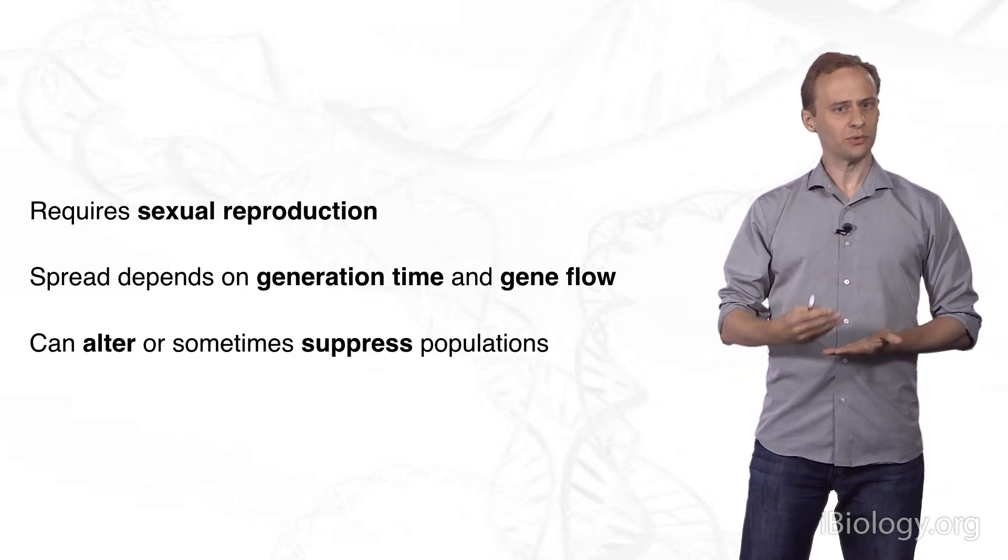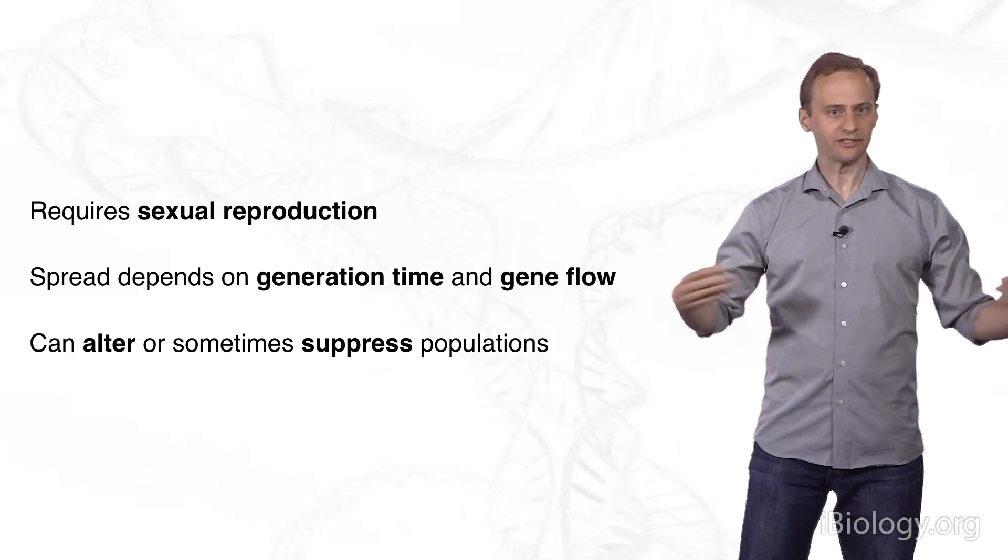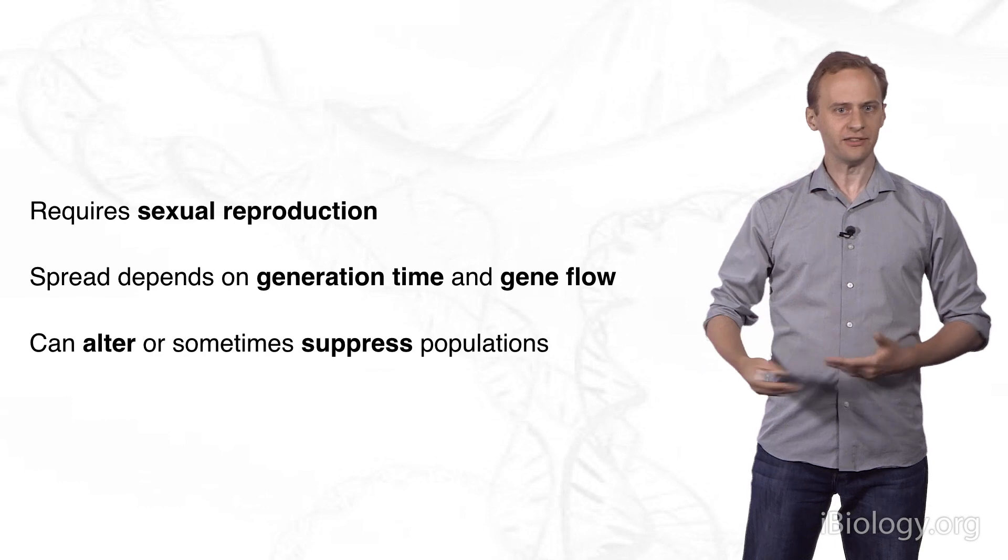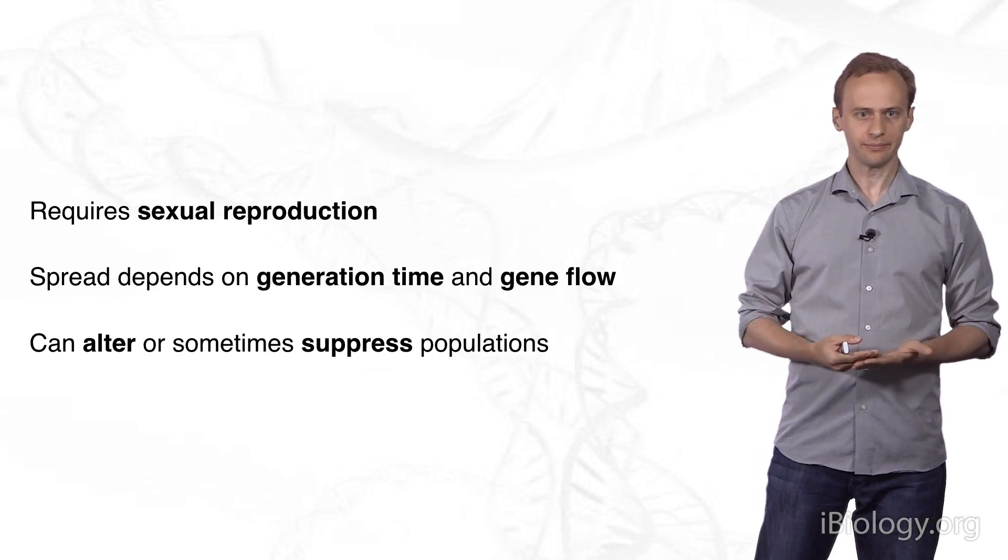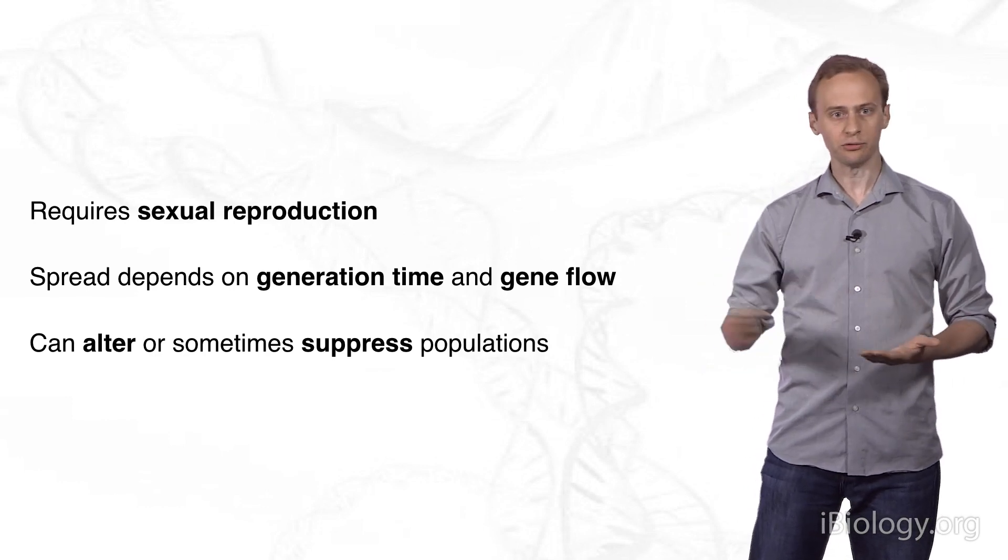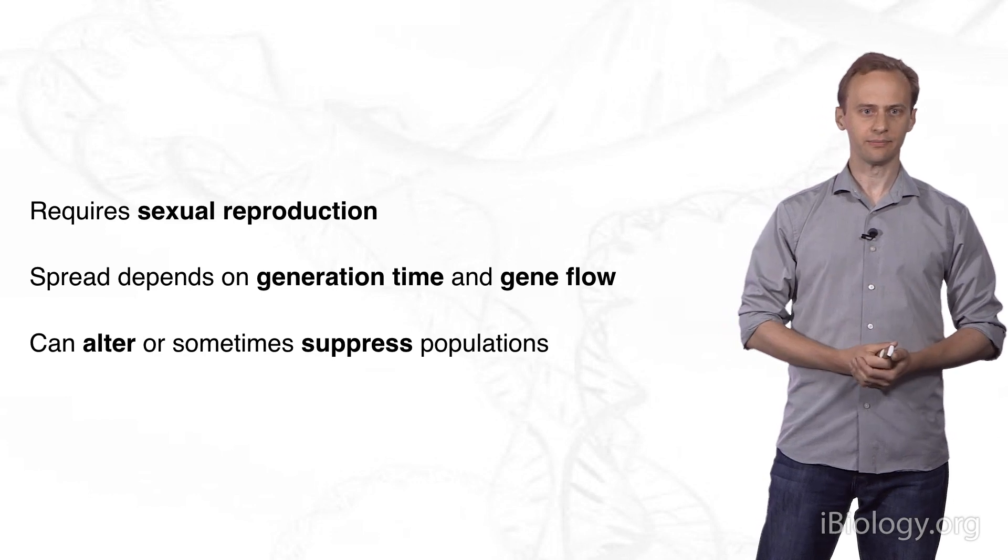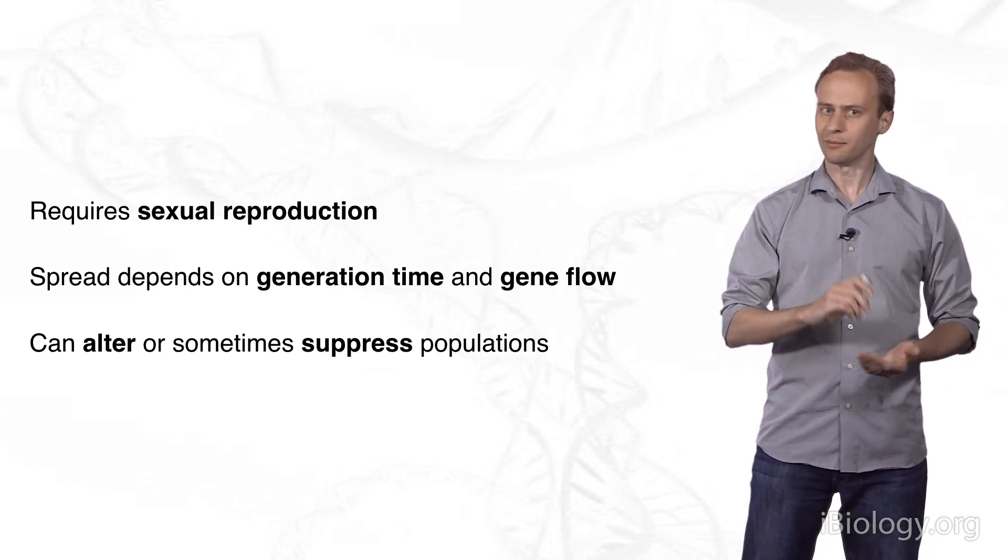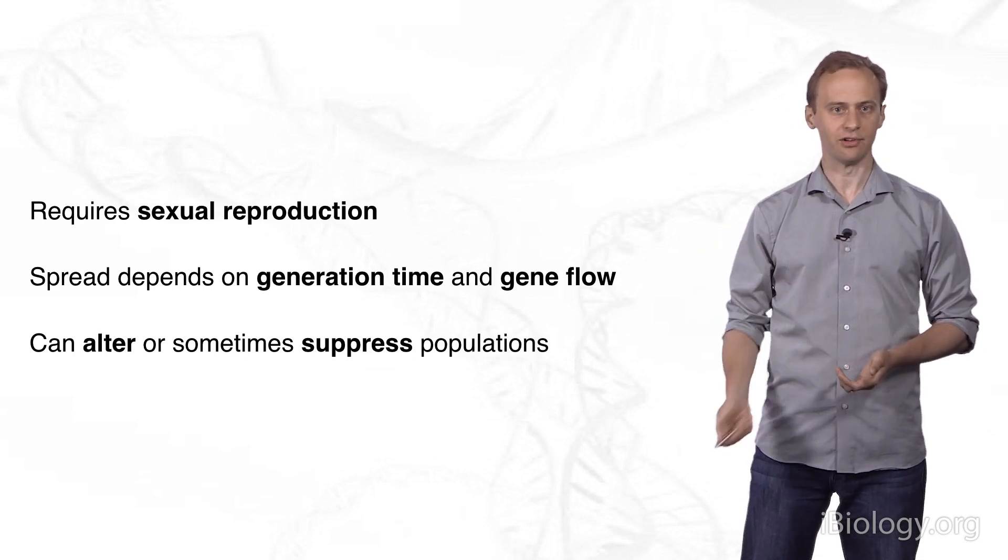But they all tend to require sexual reproduction, or at least some form of sharing genetic information. The rate at which they spread depends on the generation time of the organism, and also on the rate of gene flow between populations. Different kinds of gene drive can either alter, and some of them can also suppress, populations to lower levels.